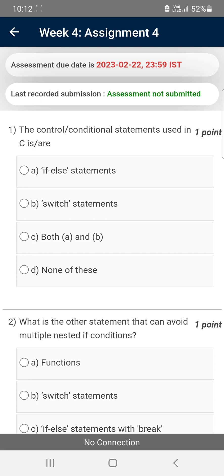Please watch the video till the end without skipping, because if you skip you may miss the content I say in between. Moving on to the first question: the control or conditional statements used in C are?